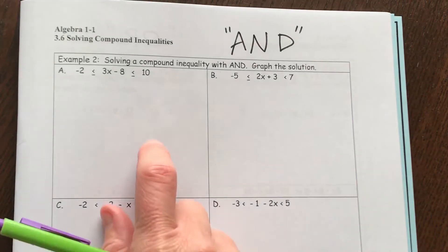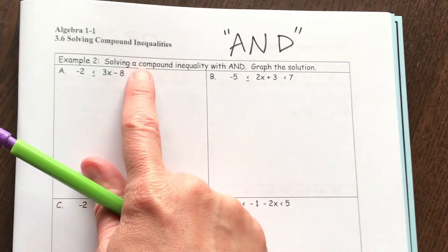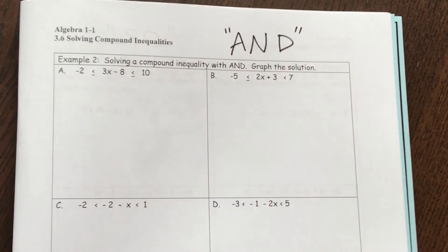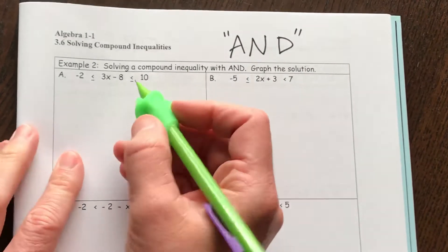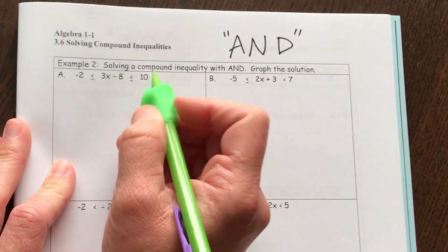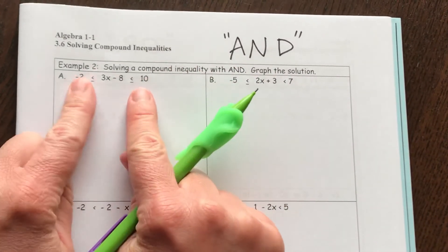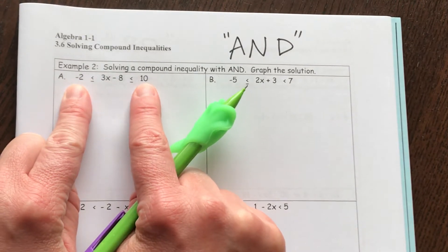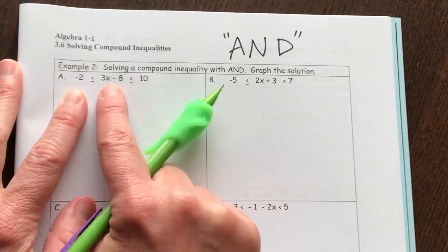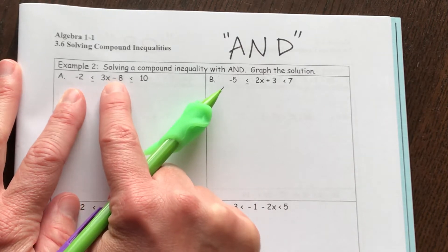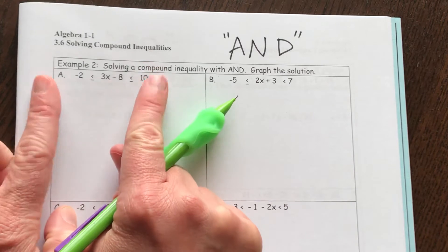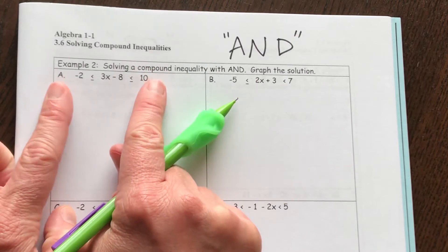In this video, I will show you how to solve and graph six compound inequalities. For solving these inequalities, we want to solve both the low and the high side of your inequality at the same time. Notice how our X is in the middle — what I want to do is isolate the letter X and solve to both sides at the same time.